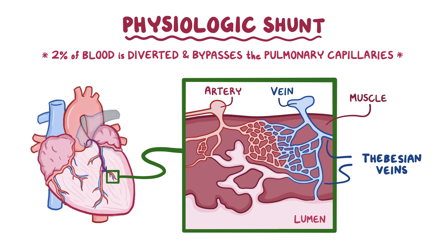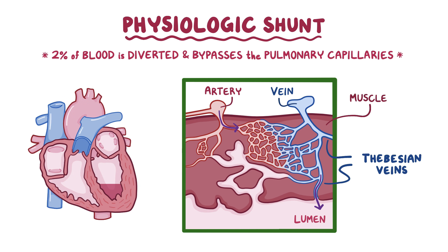So for example, if blood goes out the aorta and through the coronary arteries to the muscle in the left ventricle of the heart, then the deoxygenated blood might then drain directly into the left ventricle chamber of the heart. At that point, it would mix with the rest of the oxygenated blood and get squeezed right back out through the aorta. So this blood basically bypasses the pulmonary circulation.